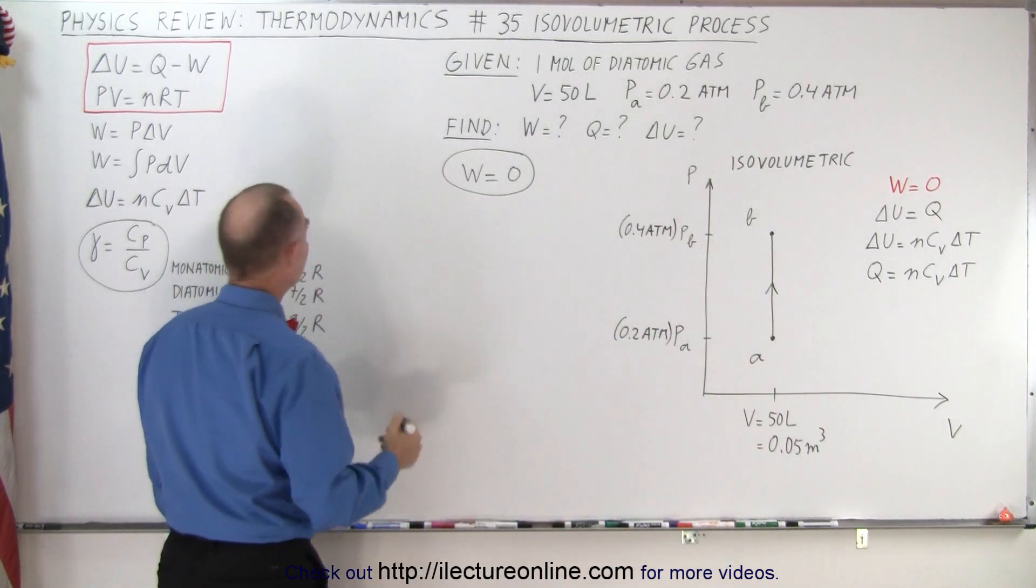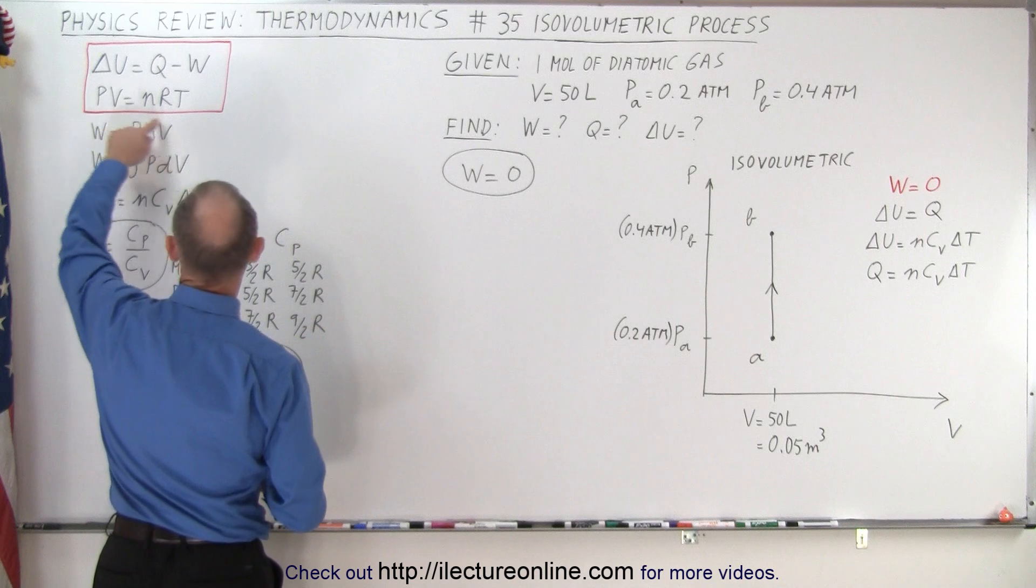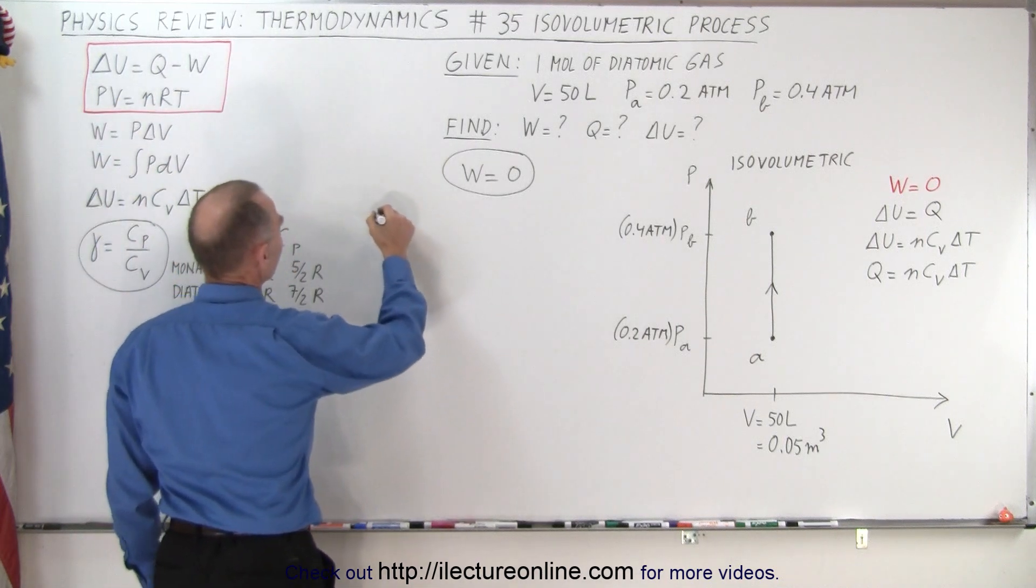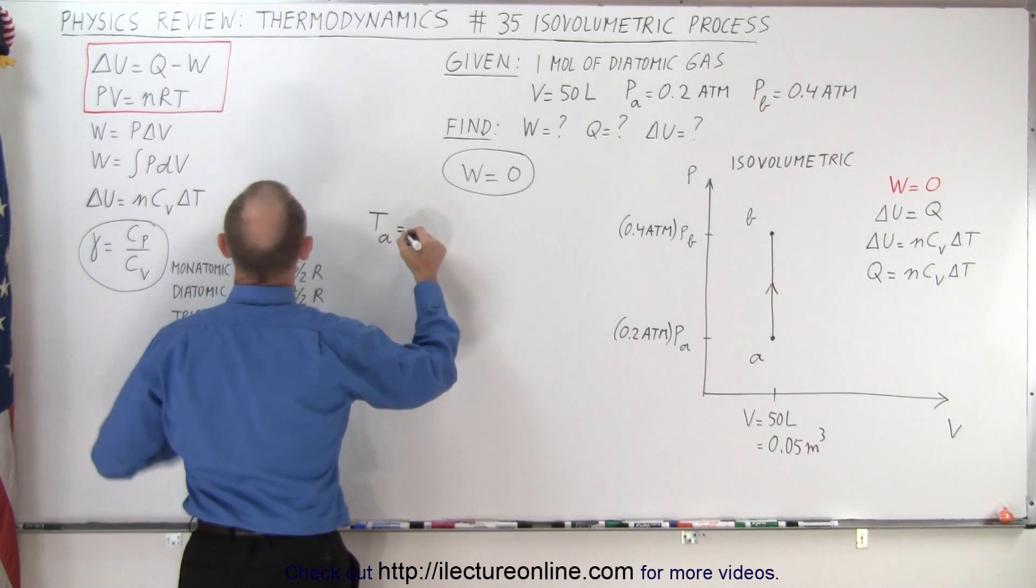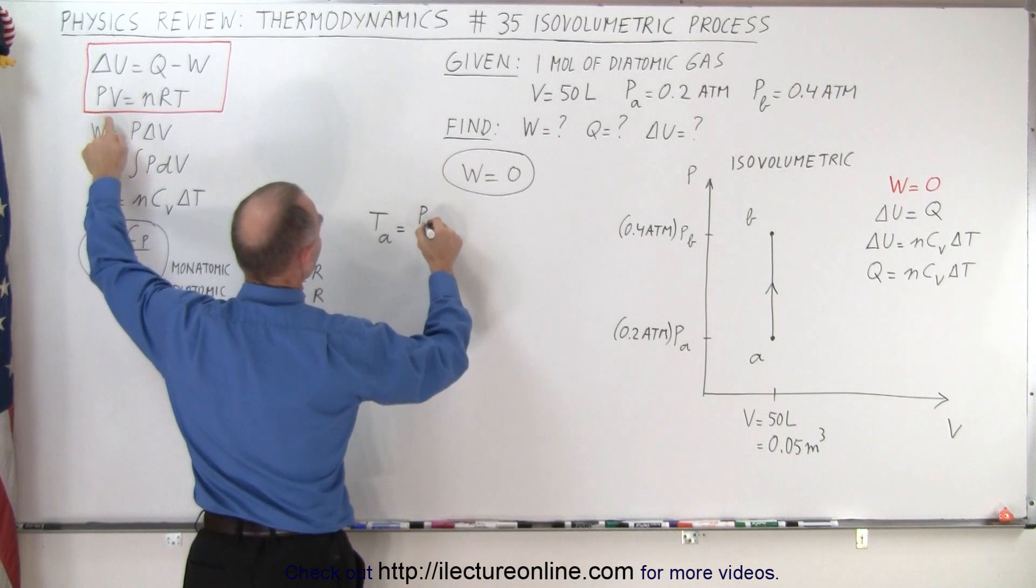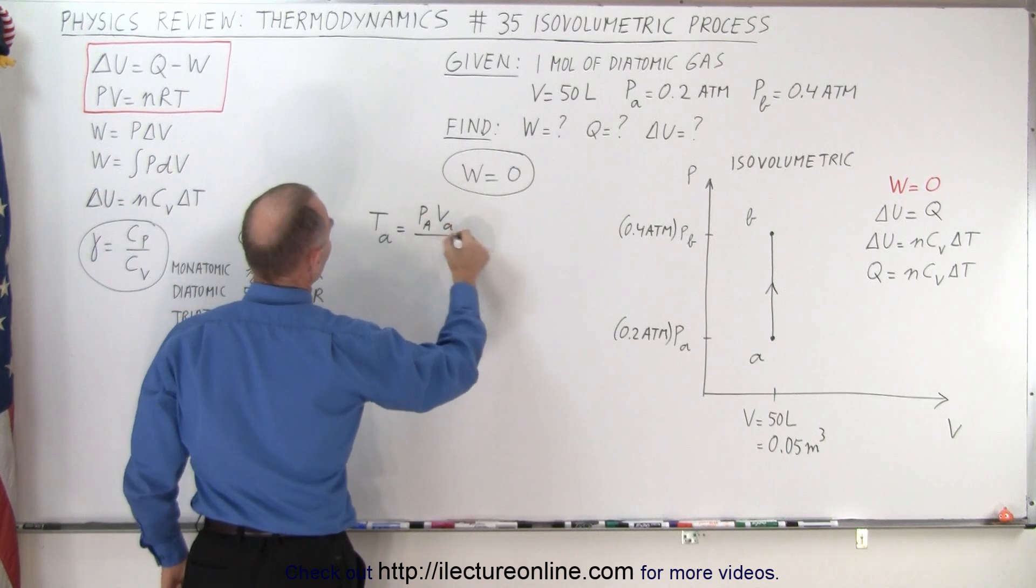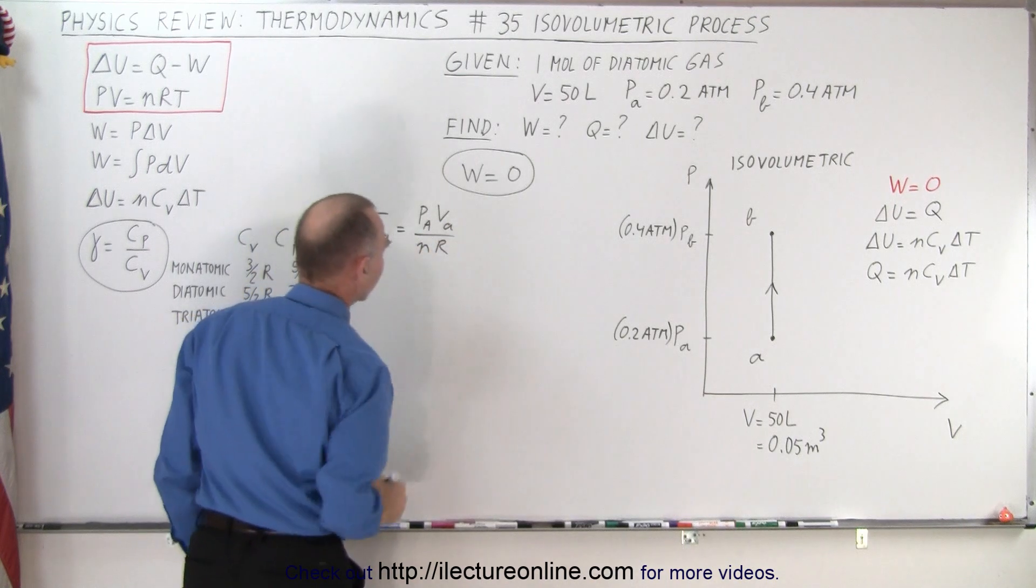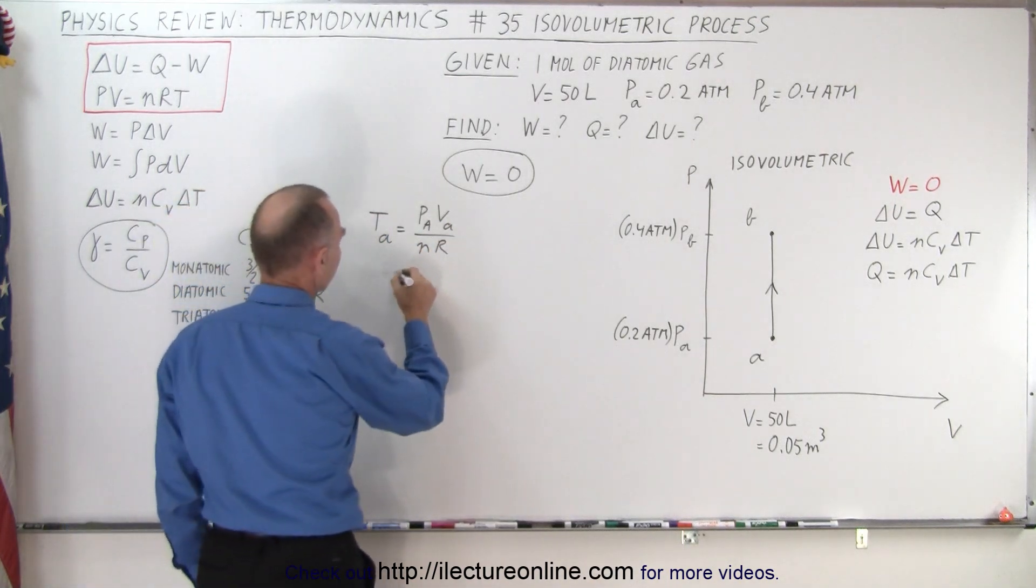So let's find the temperature at A and we're going to use the ideal gas equation which means the temperature at A is going to equal pressure at A times volume at A divided by the number of moles times the gas constant. Alright pulling in what these are.